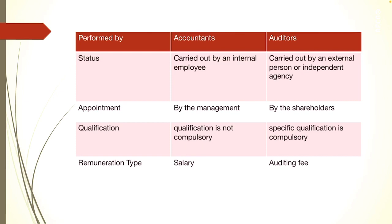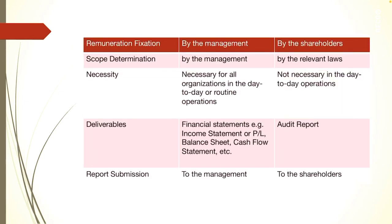Next is remuneration fixation — that is, who fixes the remuneration for the accountant and the auditor? The accountant's remuneration, which is a salary, will be fixed by the management of the company, whereas the auditor's fees will be fixed by the shareholders. Next is scope determination. The scope of accounting is determined by the management of the company, whereas the scope of auditing is determined by the relevant laws and regulations.